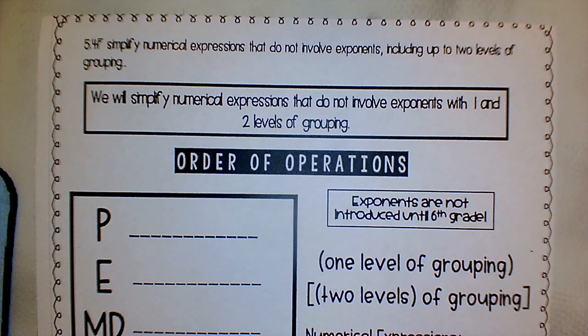So in order of operations, this is 5.4f, but it also goes along with the objective of learning the order of operations. We are learning to simplify numerical expressions that do not involve exponents, because when exponents will not be really introduced currently, but you do know what they are because of the anchor chart, including up to two levels of grouping. So we're going to simplify numerical expressions that do not involve exponents with one and two levels of grouping.